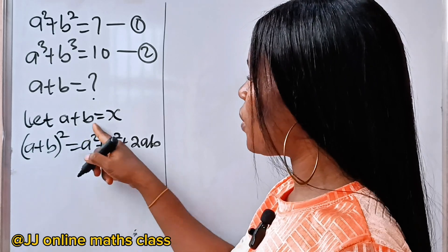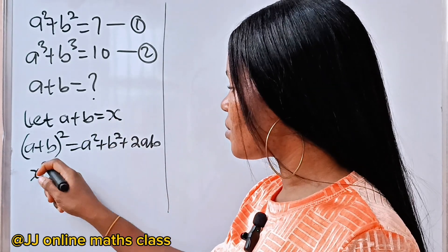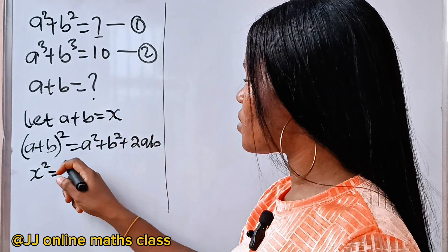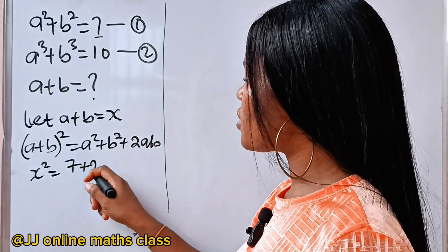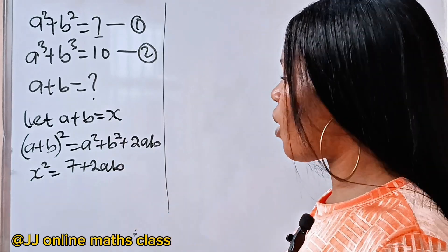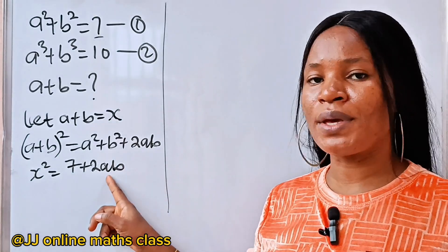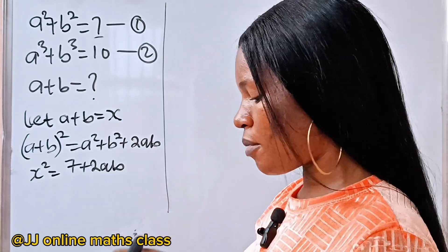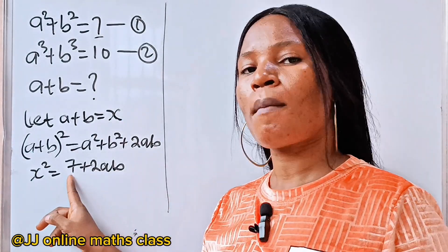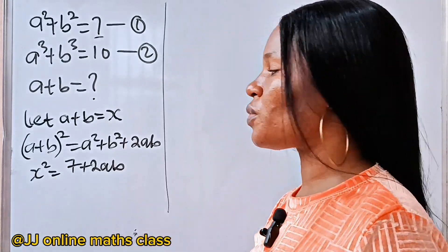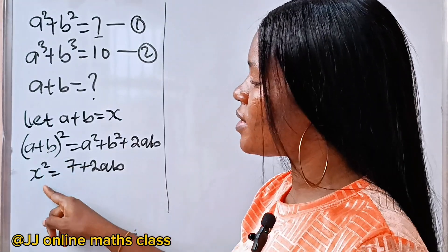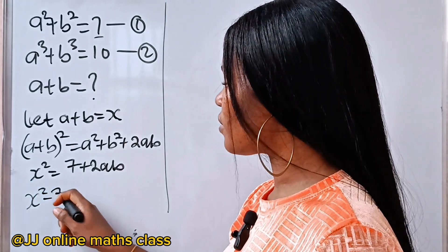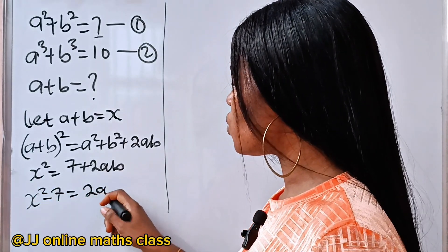We assigned a plus b to x, so we say x squared is equal to a squared plus b squared, which is given as 7, plus 2ab. To make ab the subject, let's remove this 7 by subtracting it from both sides. So we have x squared minus 7 is equal to 2ab.